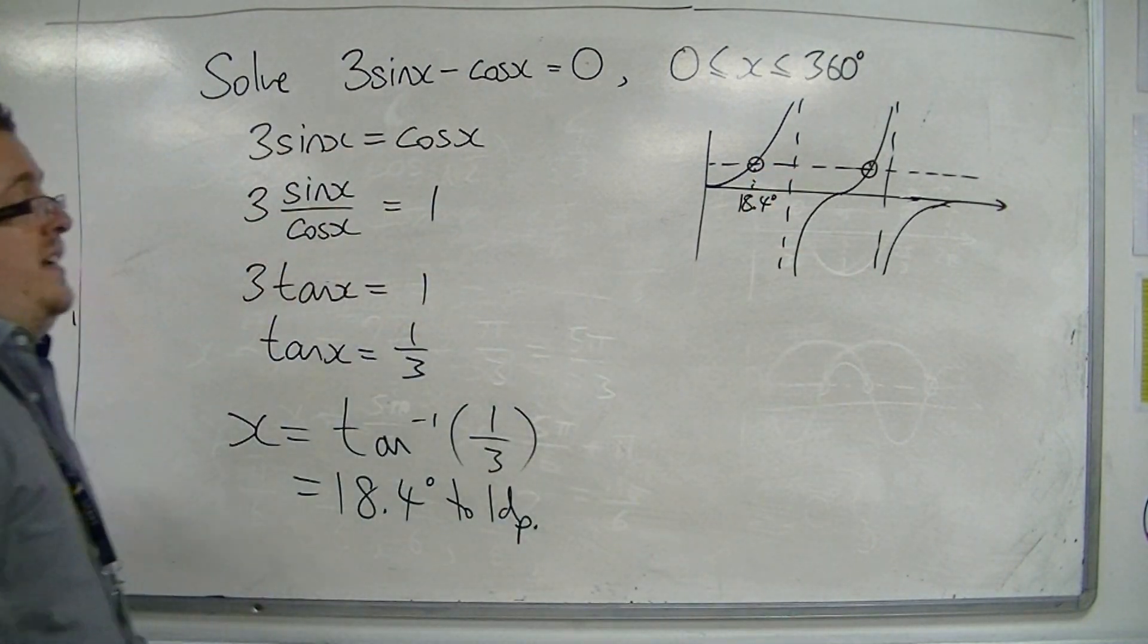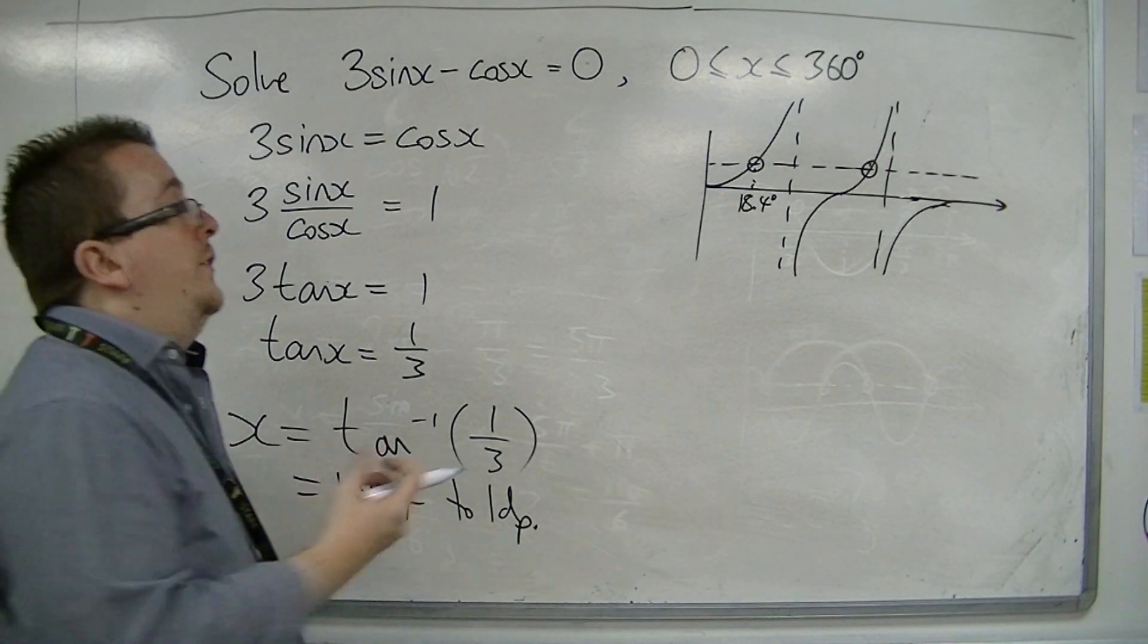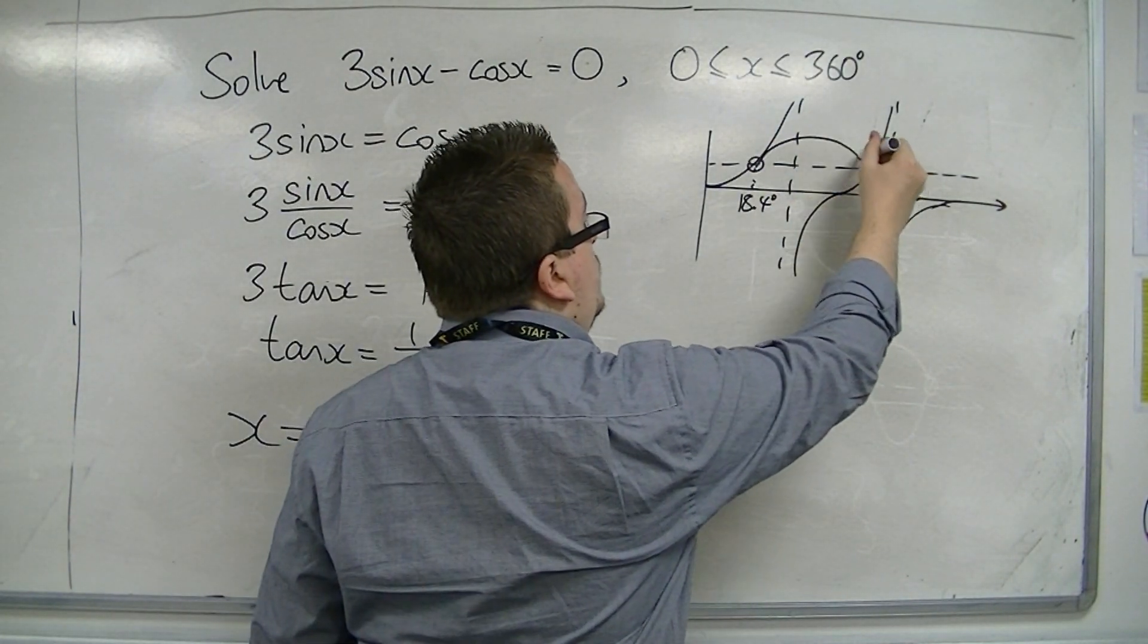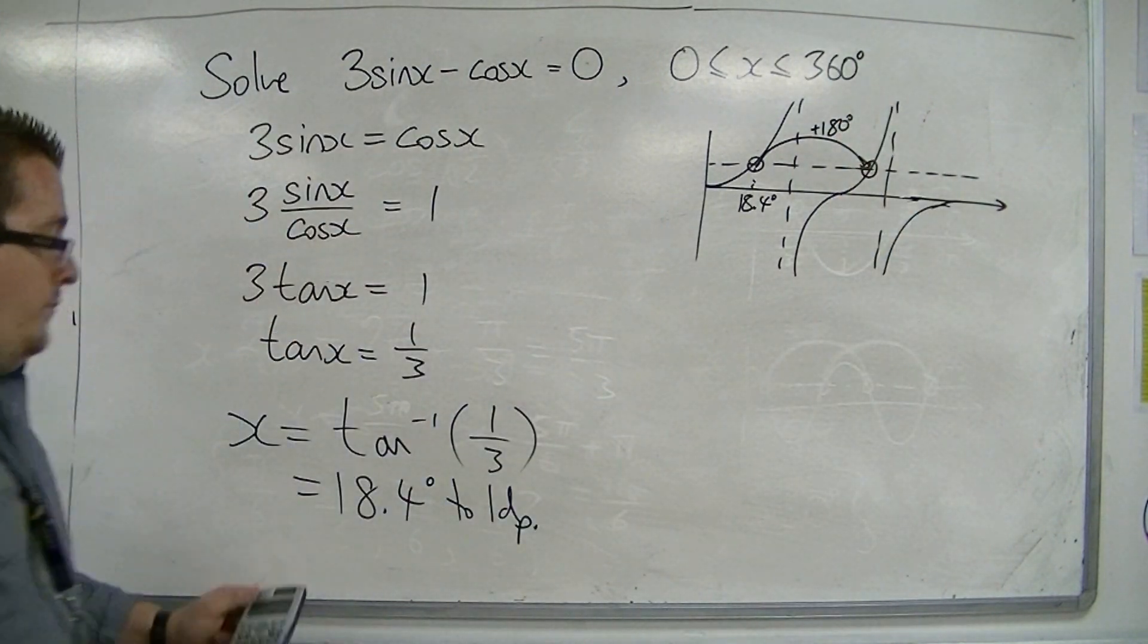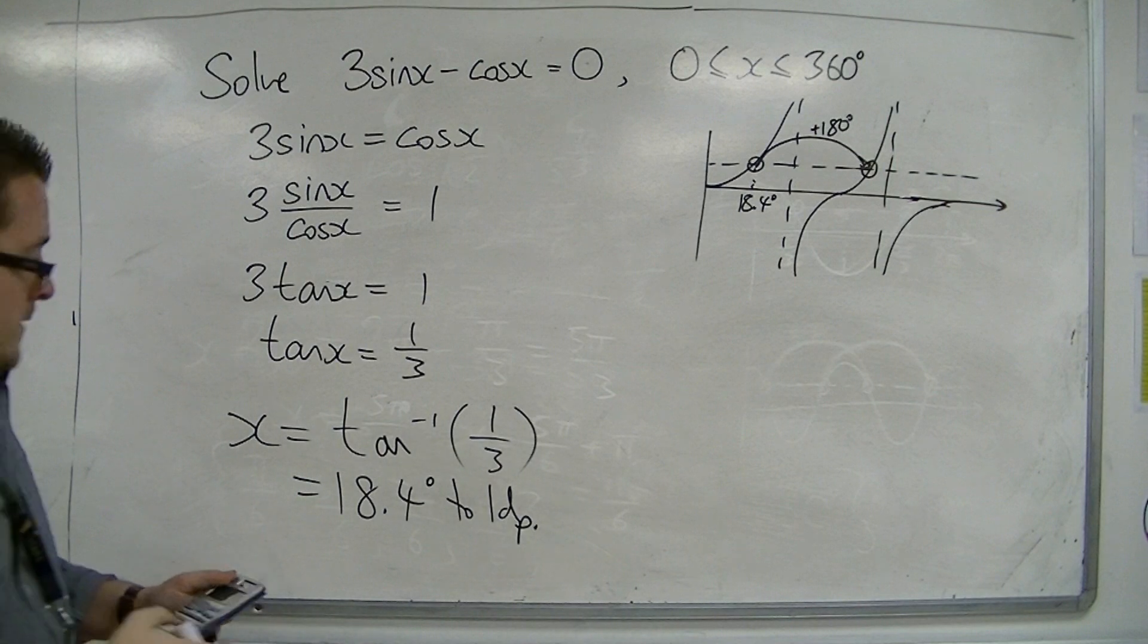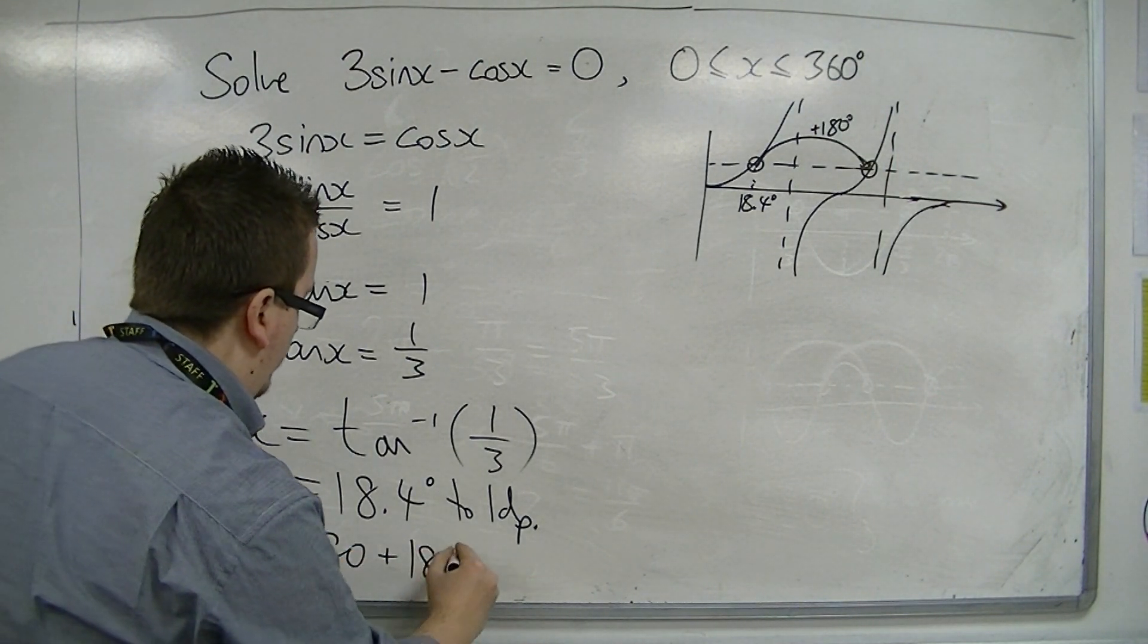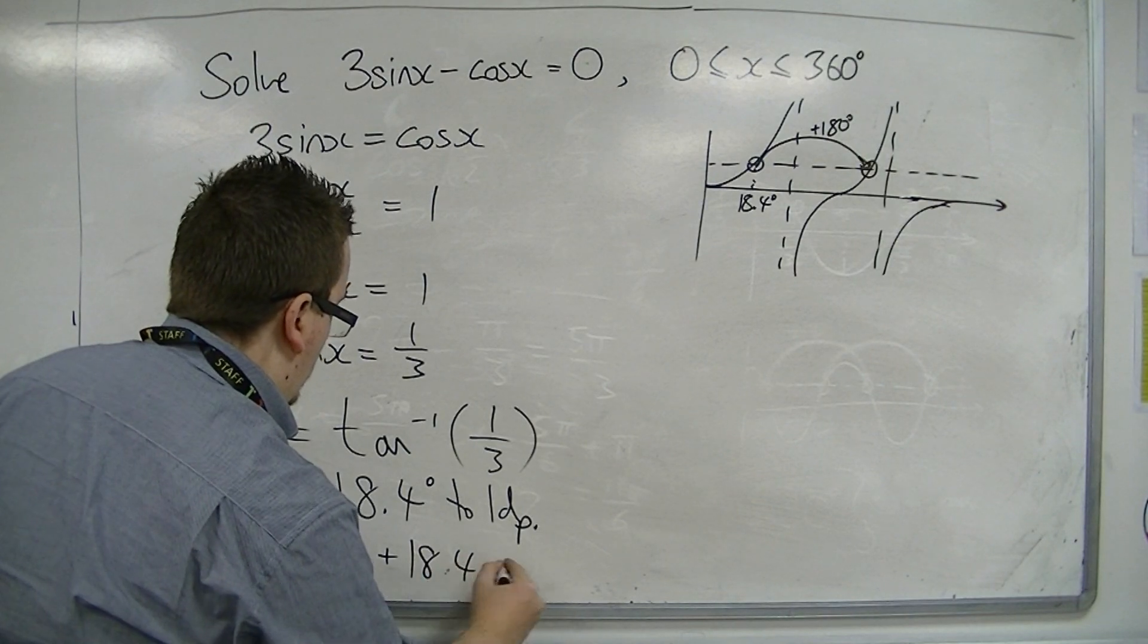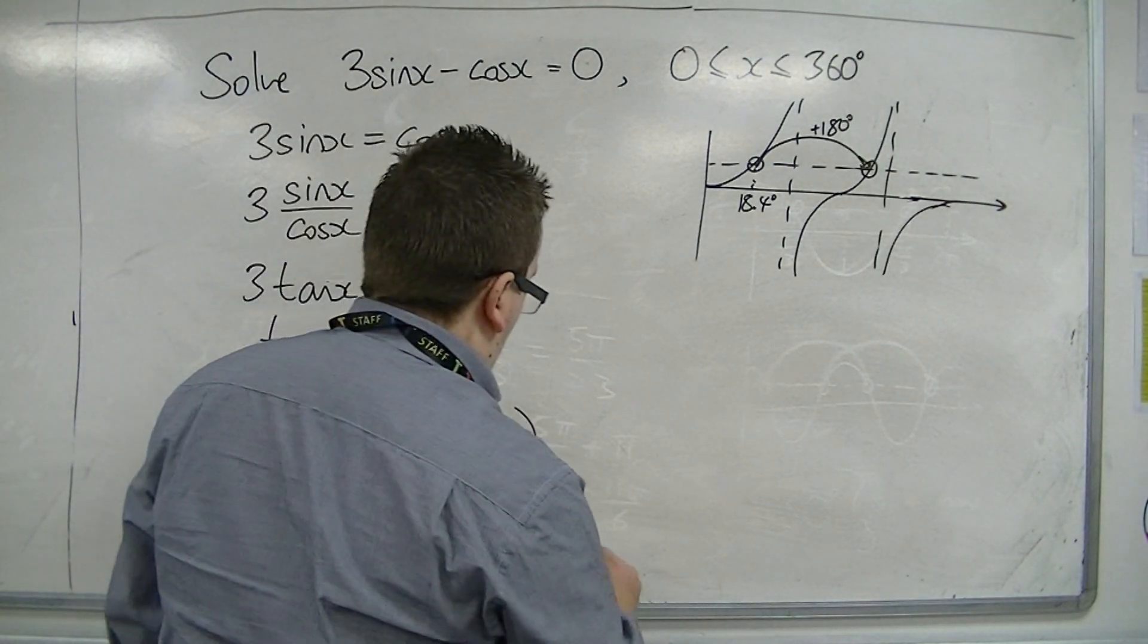And remember to get the next solution, I'm going to add the period of tan. So that's just 180 degrees. So add 180 to that. So x equals 180 plus 18.4, which is 198.4.